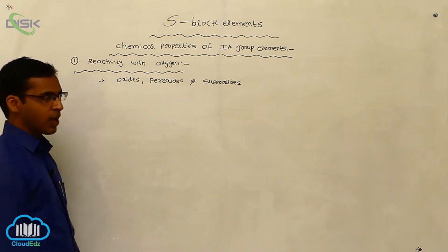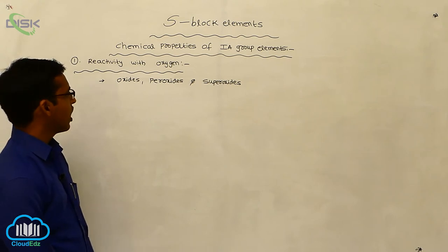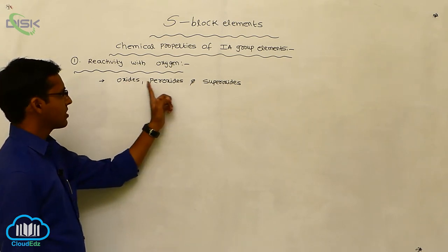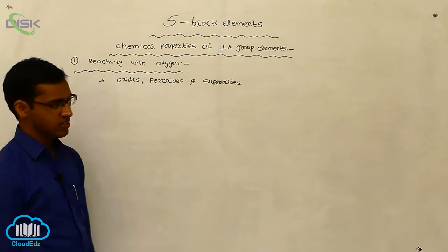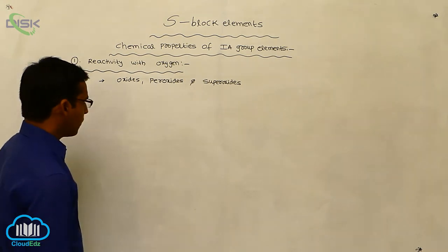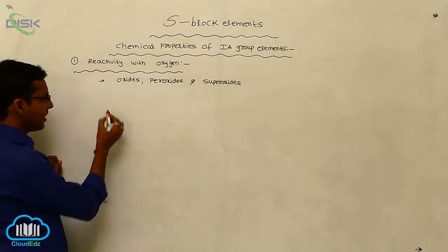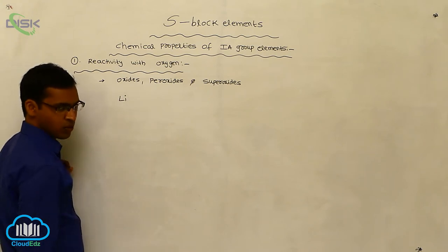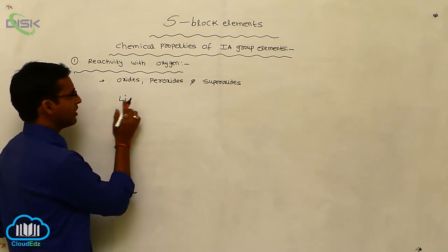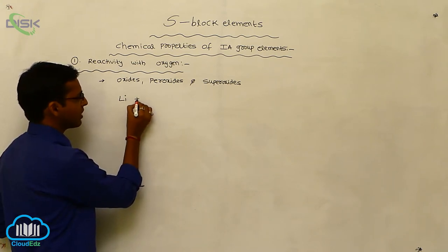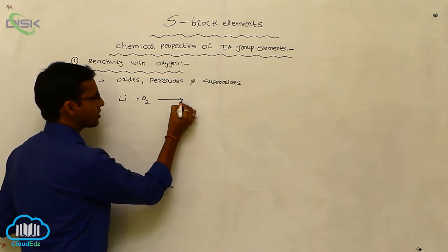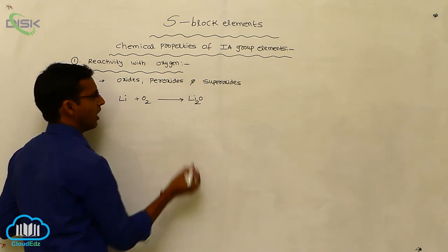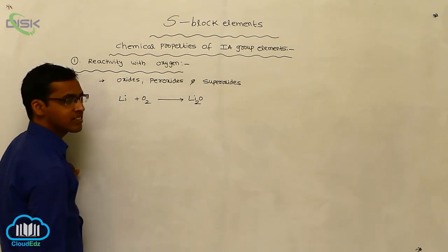Three different types of oxides are produced from first group elements: oxides, peroxides, and superoxides. Generally, lithium is the first group element and the first metal. When lithium reacts with oxygen, it produces lithium monoxide, that is lithium oxide.